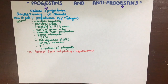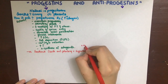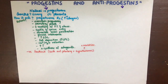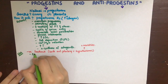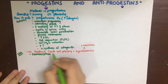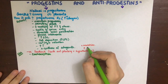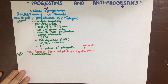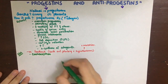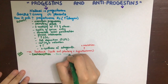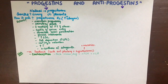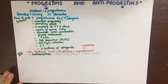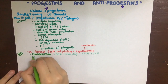Let's see some uses of progestins. Firstly, they are used in contraception — all sorts of methods — in combination with estrogen and even alone. In combination with estrogen, it will inhibit some unwanted effects of estrogen such as breast cancer and endometrial cancer. As a contraceptive, it acts by producing a thick mucus plug, preventing sperm entry, inhibiting FSH so there is no follicle growth, and inhibiting LH so there is no ovulation.